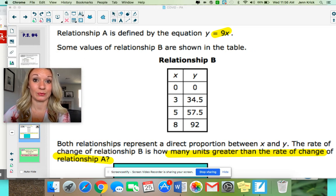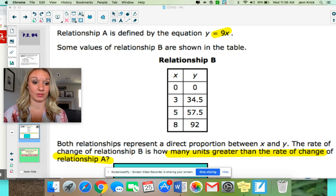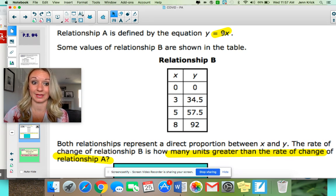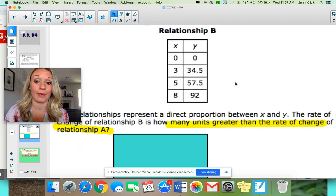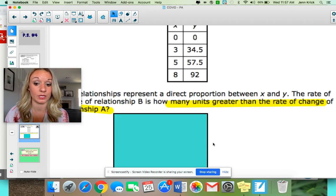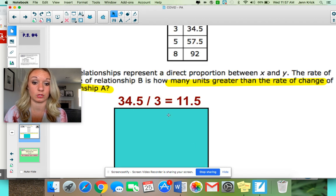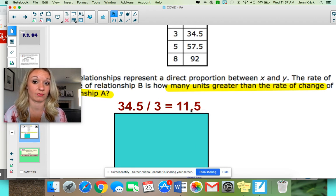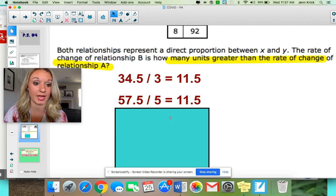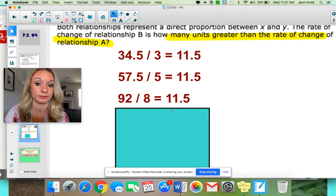Question two. Some of you guys really overthought this one and it wasn't as hard as you thought it was. We're comparing two things. Relationship A says you are defined by the equation Y equals 9X. 9 is your constant rate of change. It's given to you. You don't have to do any calculating there. However, you do have to find the constant rate of change for relationship B. Remember that when we have a table, we can do that by just dividing. So you can do 34.5 divided by 3, which gives me 11.5. Let's check it in the next row. 57.5 divided by 5. Again, it's 11.5. Try it with the last one. Because it's consistently 11.5, that is your constant rate of change.